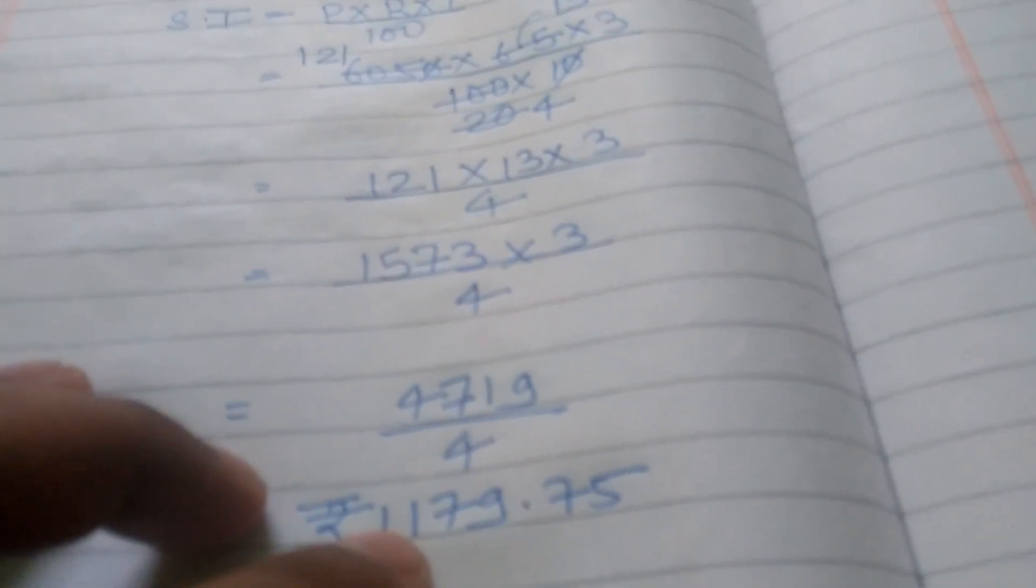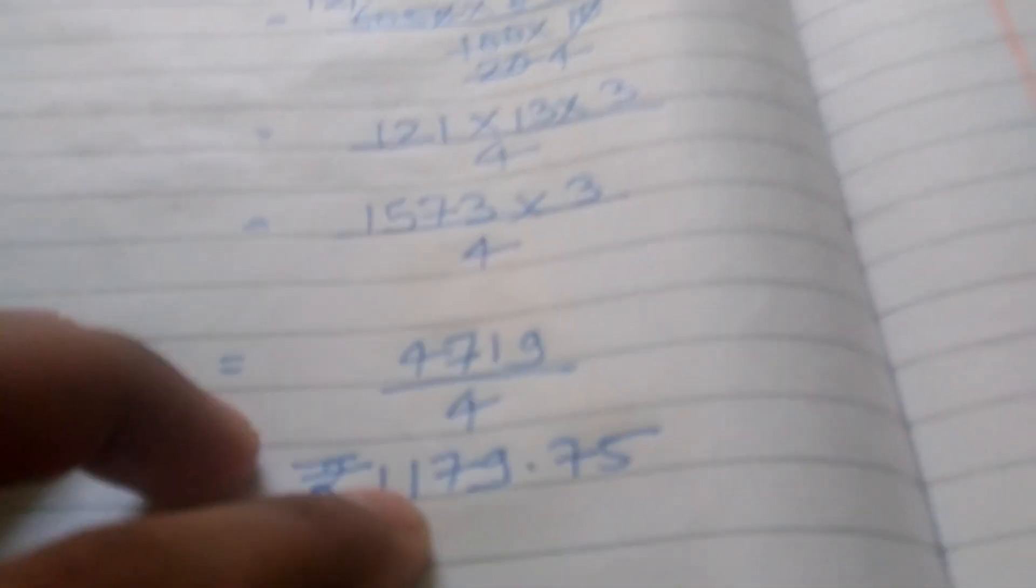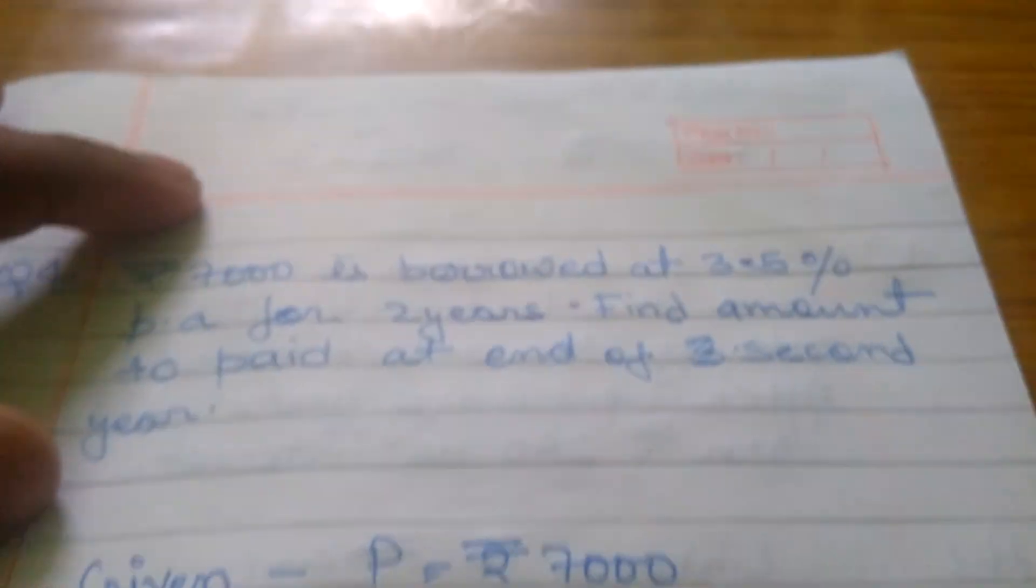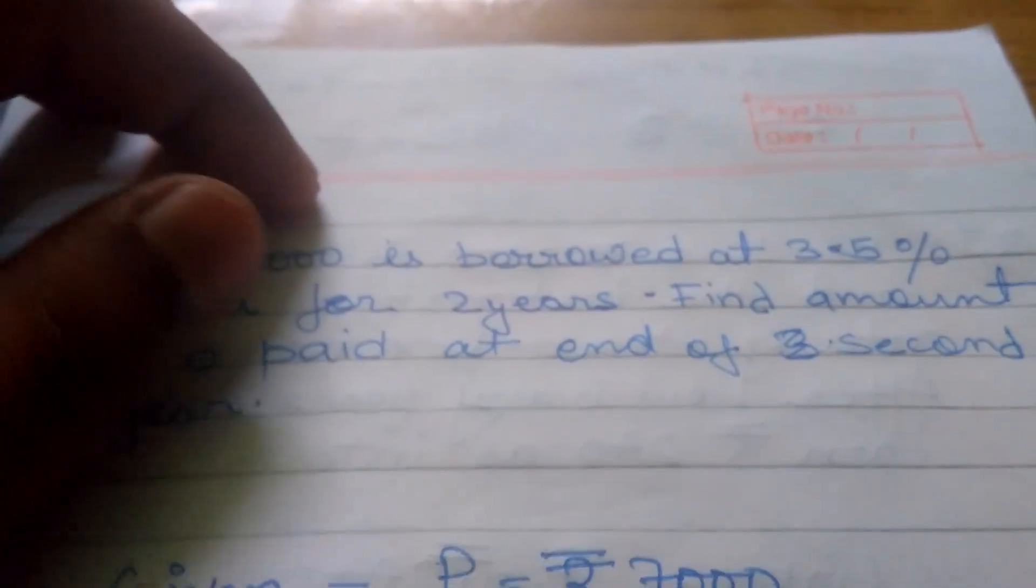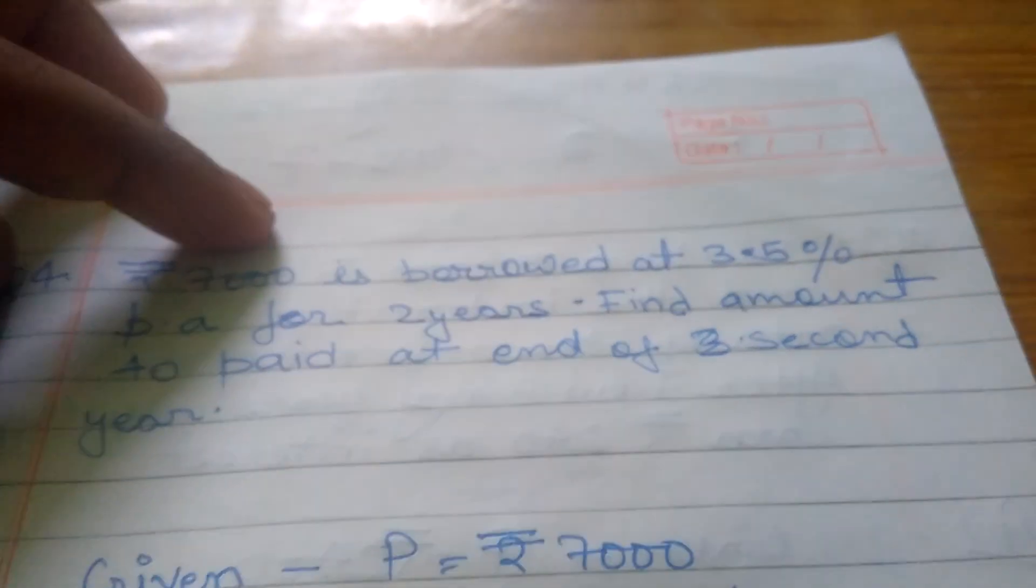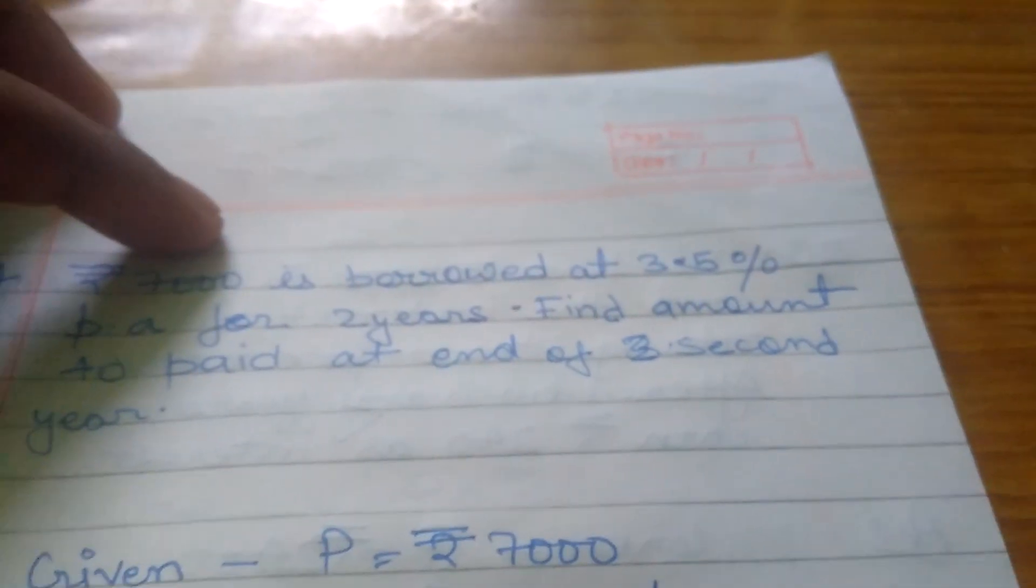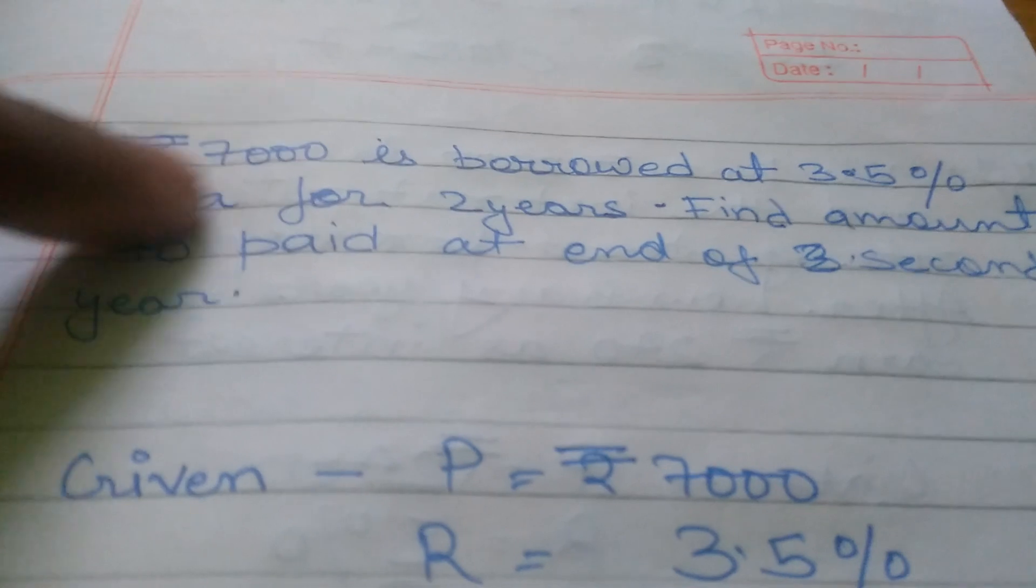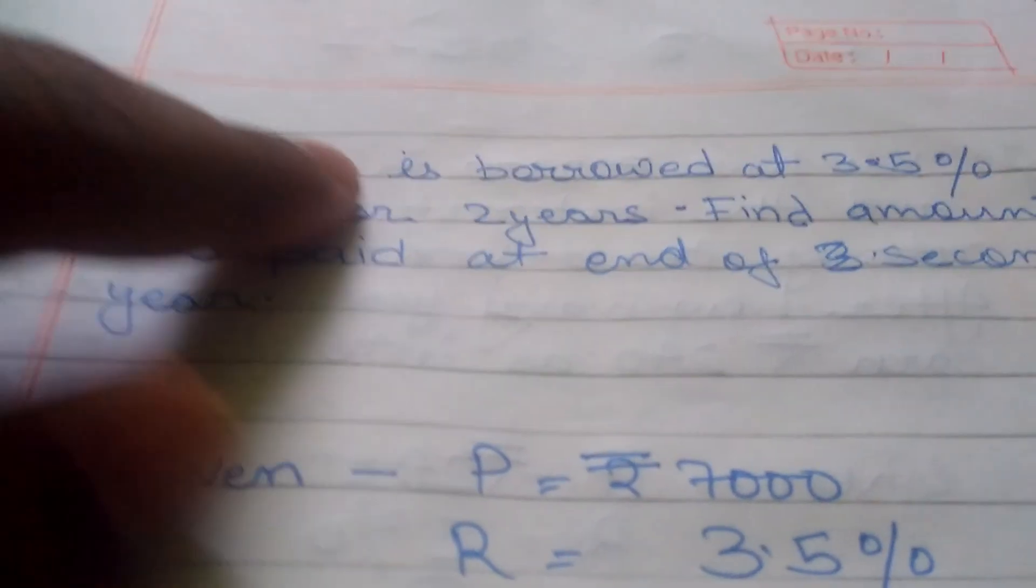The Simple Interest will be ₹1,179.75. The fourth question: ₹7,000 is borrowed at 3.5% per annum for two years. Find the amount to pay at end of second year. In this question, there is ₹7,000 Principal.